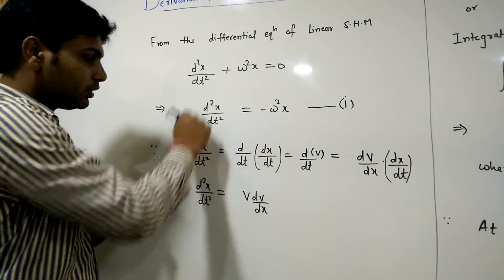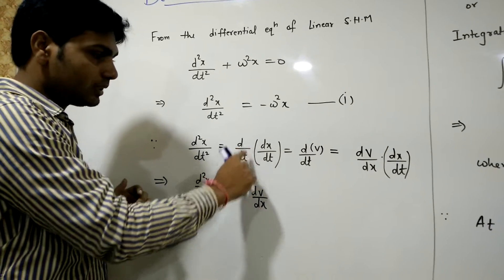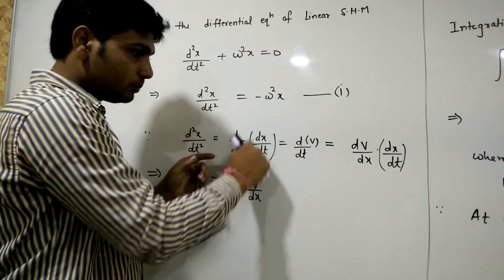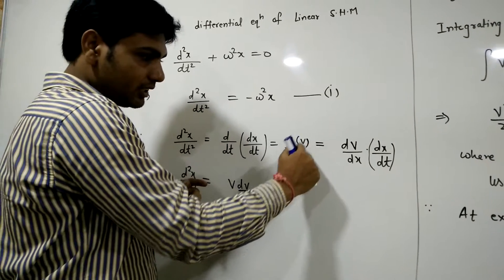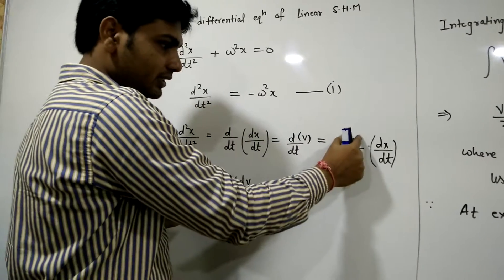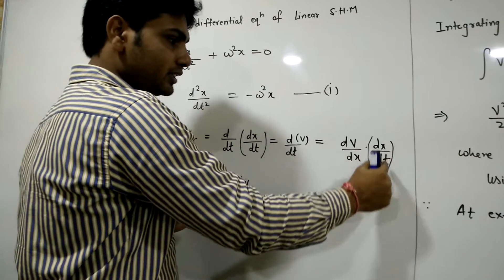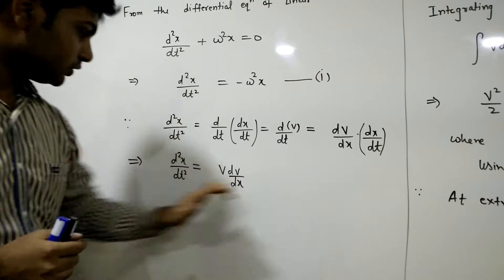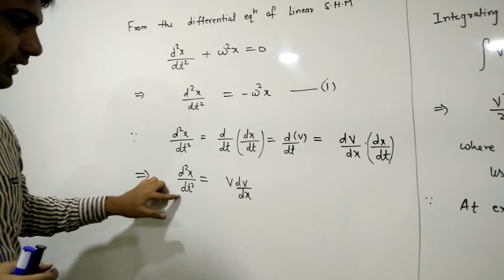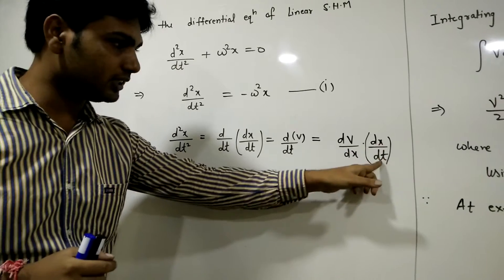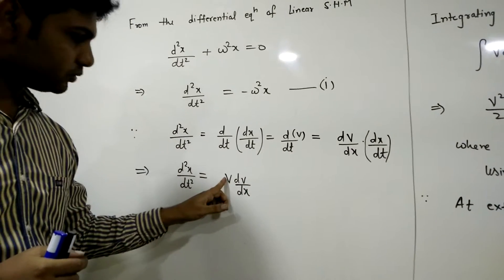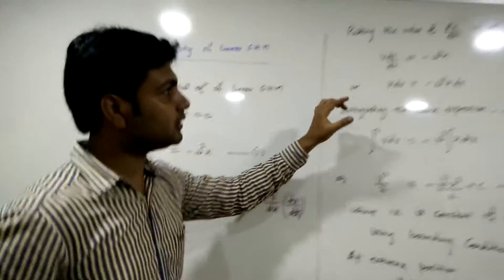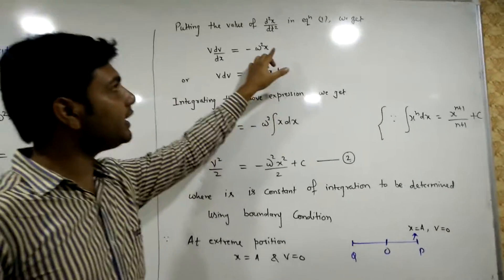The term d²x/dt² can also be written as d/dt of dx/dt. The term dx/dt is called velocity, so it is dv/dt, or it can also be written as dv/dx · dx/dt. Here dx cancels from numerator and denominator, so d²x/dt² equals v · dv/dx.